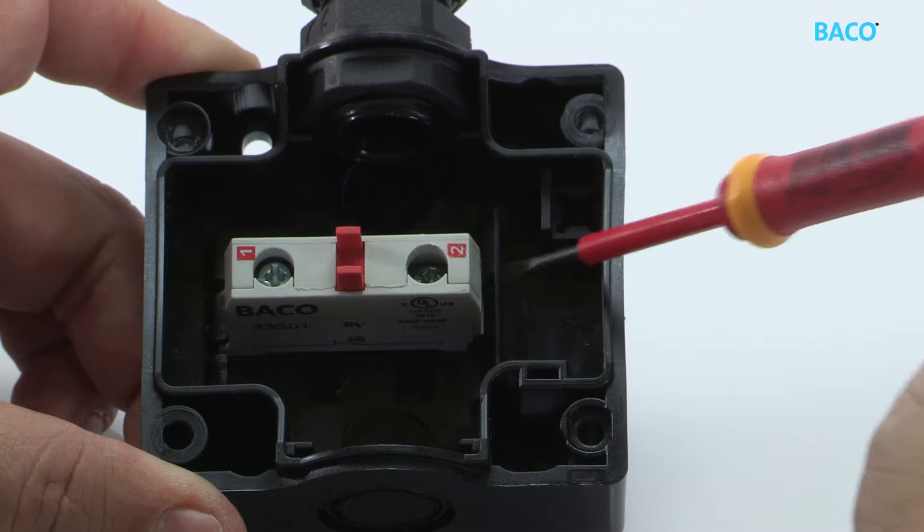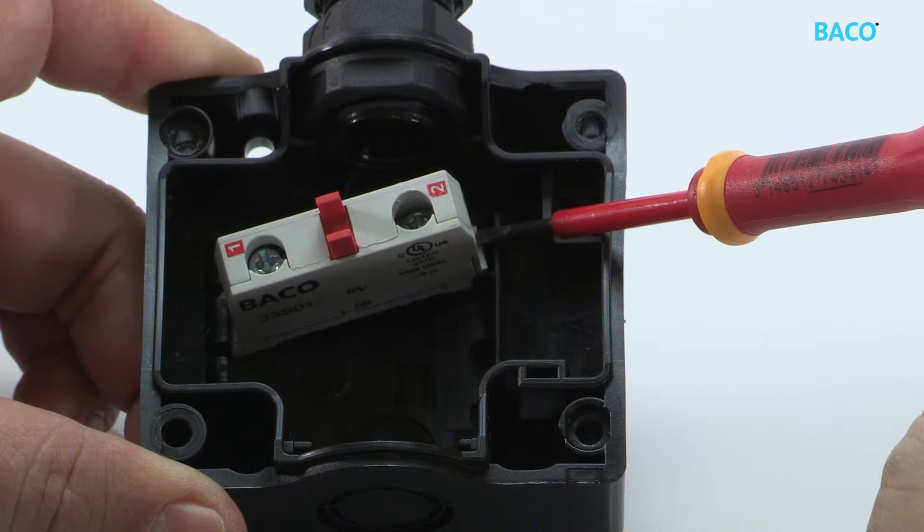Contact blocks can be easily removed. Take a flat-blade screwdriver and remove the base-mounted block.